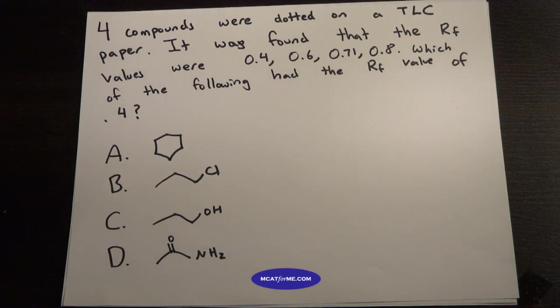So today we have an MCAT question of the day and it's asking, four compounds were dotted on a TLC paper. It was found that the RF values were 0.4, 0.6, 0.71, and 0.8. Which of the following had the RF value of 0.4?